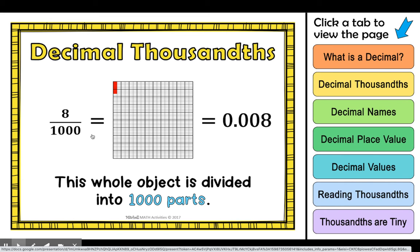So this whole has been cut into a thousand equal pieces. And here we have eight of those tiny little pieces shaded in. Eight of those tiny little pieces. And you would read that eight thousandths.